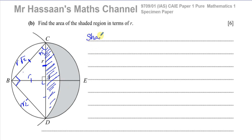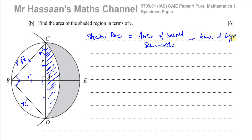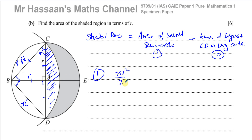If I find the area of this semicircle and take away the area of this segment, I'm left with the area required. So: shaded area equals area of the small semicircle minus area of segment CD in the large circle. For the semicircle, the radius is R, so the area is πR² over 2. Now for the segment, we can use some formulas from the topic of radian measure.